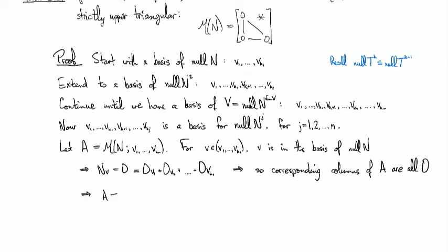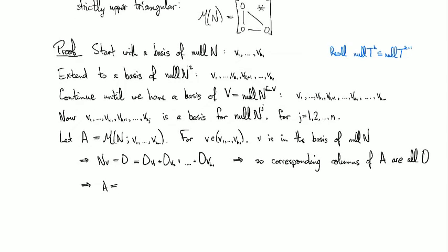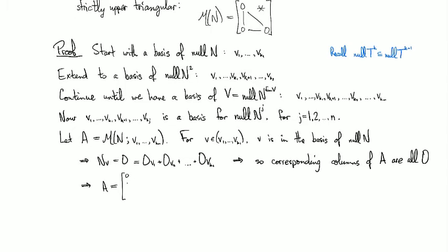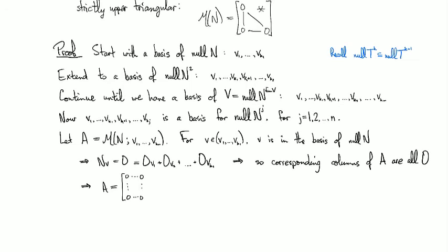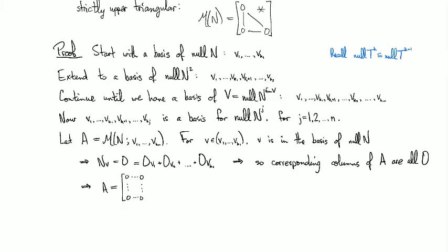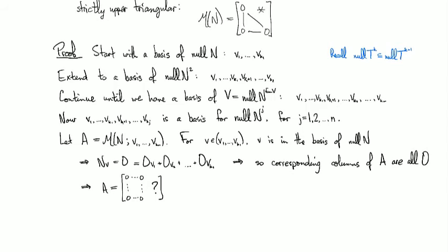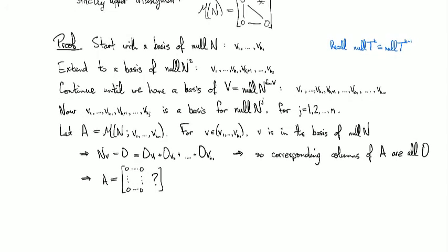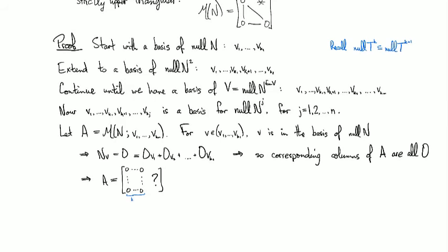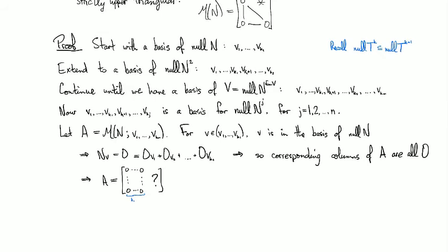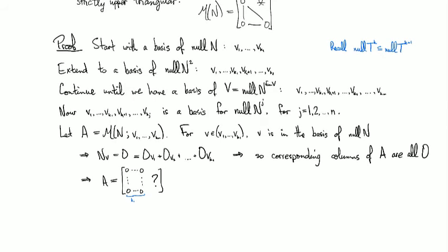So that means A looks like, and then we've got zero. And then a big question mark, but so this is for the first K1 columns right here. So we definitely have that much. Okay.